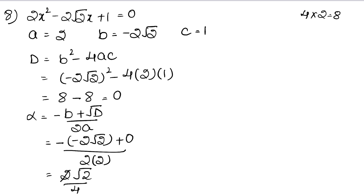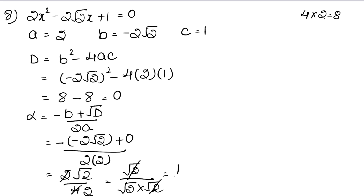Simplifying 2√2 upon 4: we can write this as 2√2 upon (2 times √2 times √2), which simplifies by cancelling √2, giving 1 upon √2. So alpha equals 1/√2.